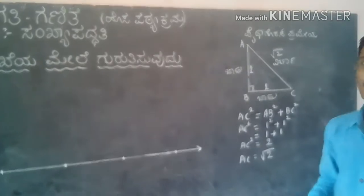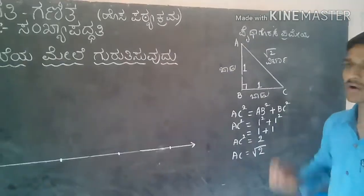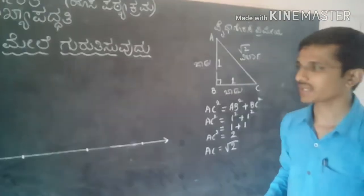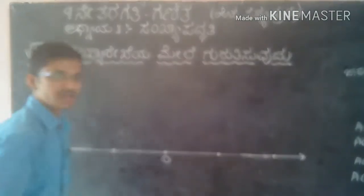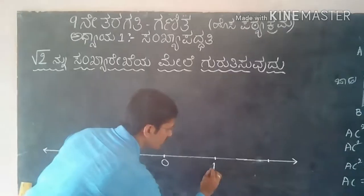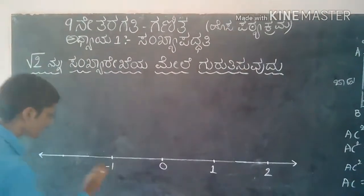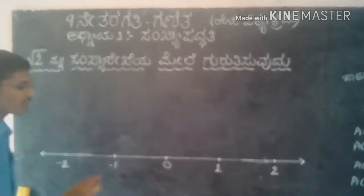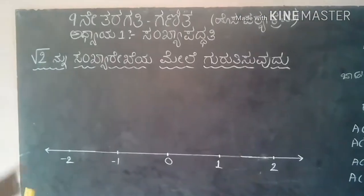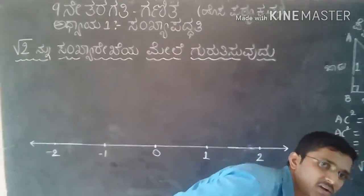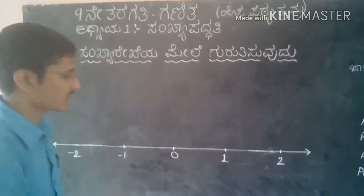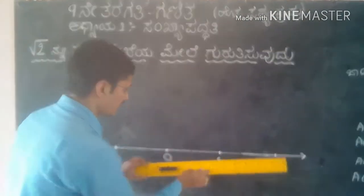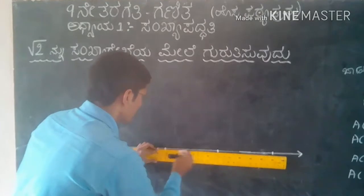That means we will show root 2. The first step is to make root 2. The second step involves the calculation. This is 1, this is 2, minus 1, minus 1. Now, we are going to take 1 cm. 1 cm is 1 cm.